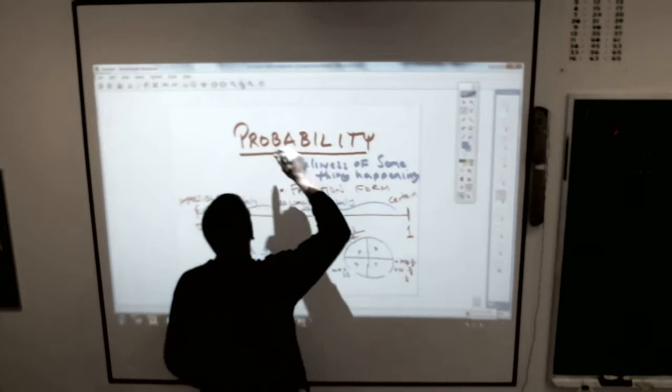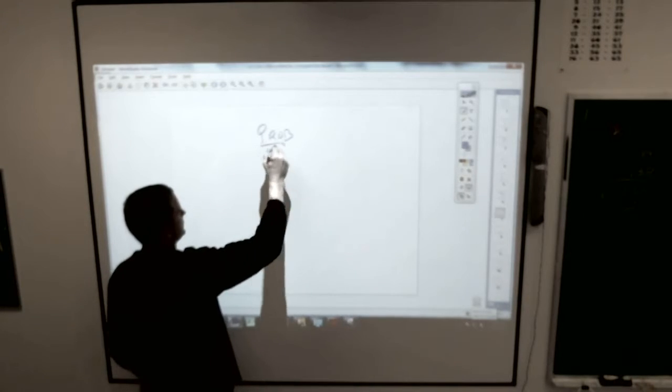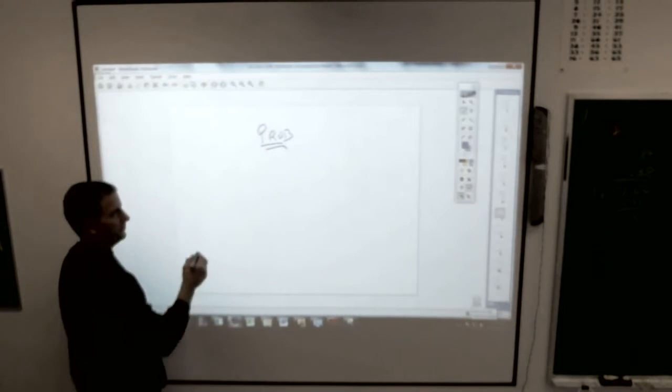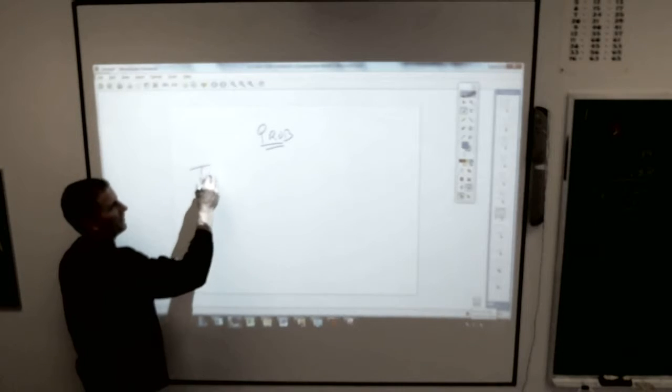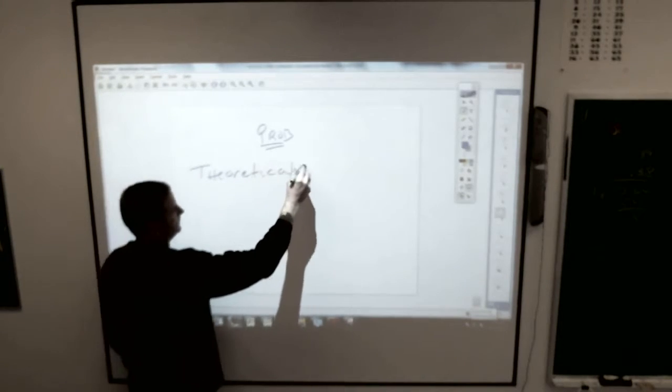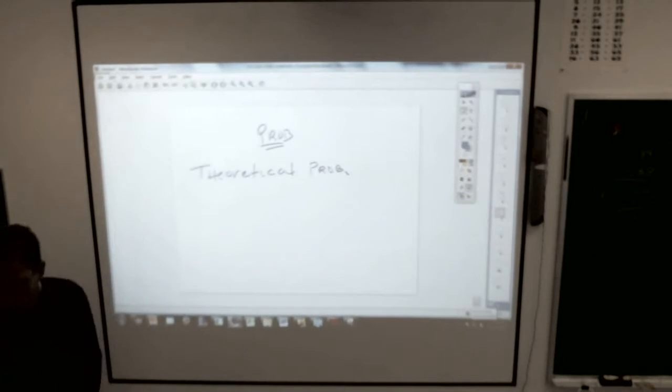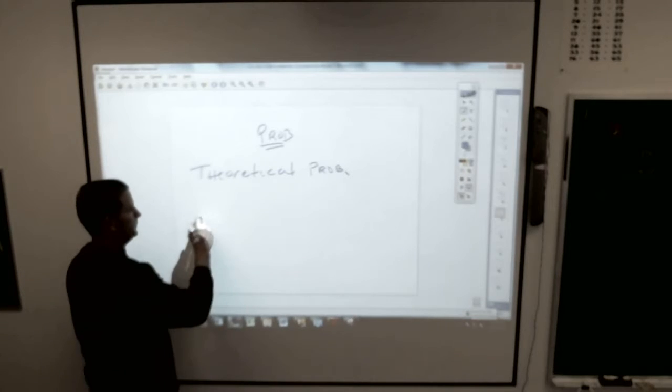And underneath of that, under probability, put this little subheading. We have two different types of probabilities. We have theoretical probability, and we have what is called experimental probability.